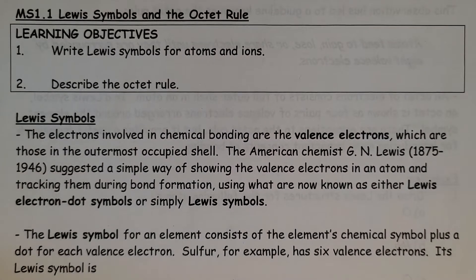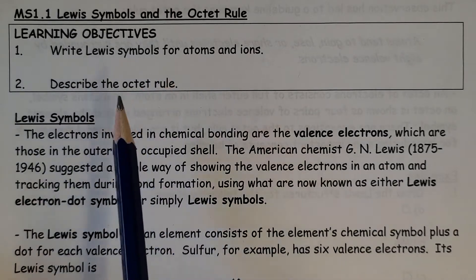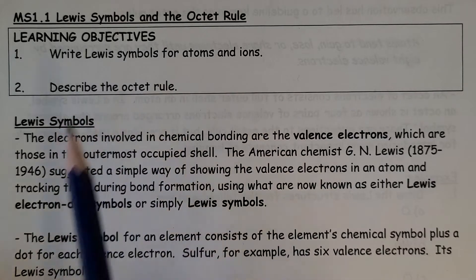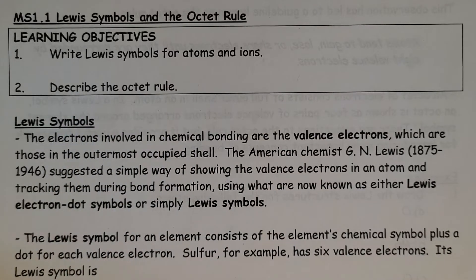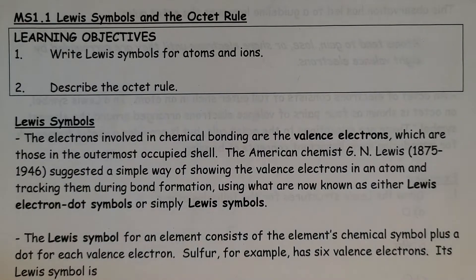Welcome back to Chemistry 30. This is MS 1.1, Lewis Symbols and the Octet Rule section. We'll look at writing Lewis symbols for atoms and ions and describing the octet rule.